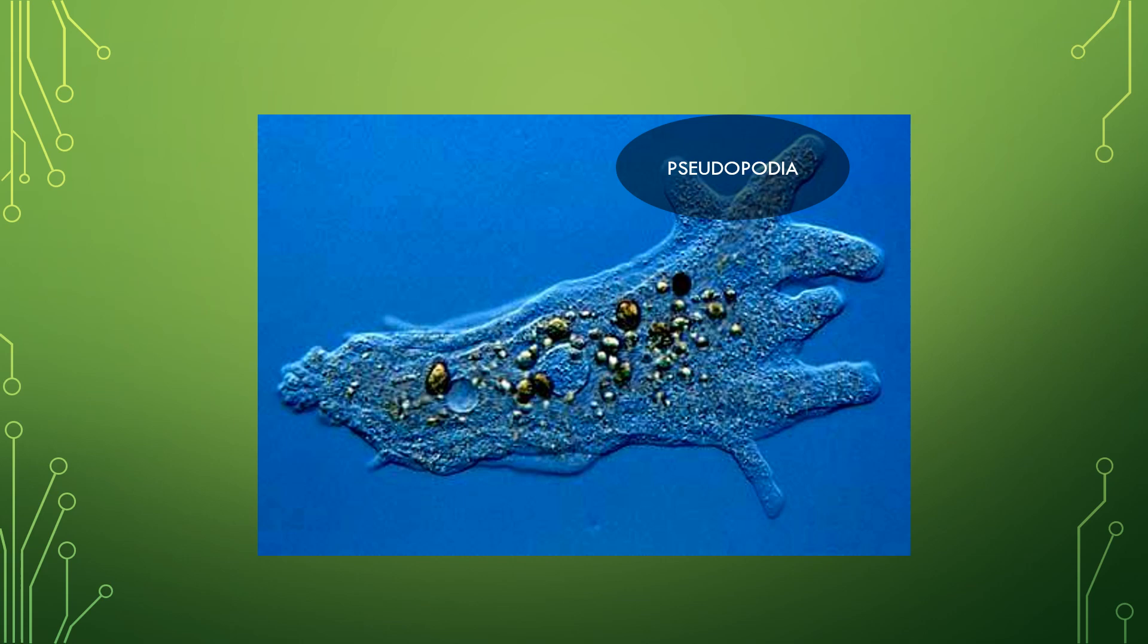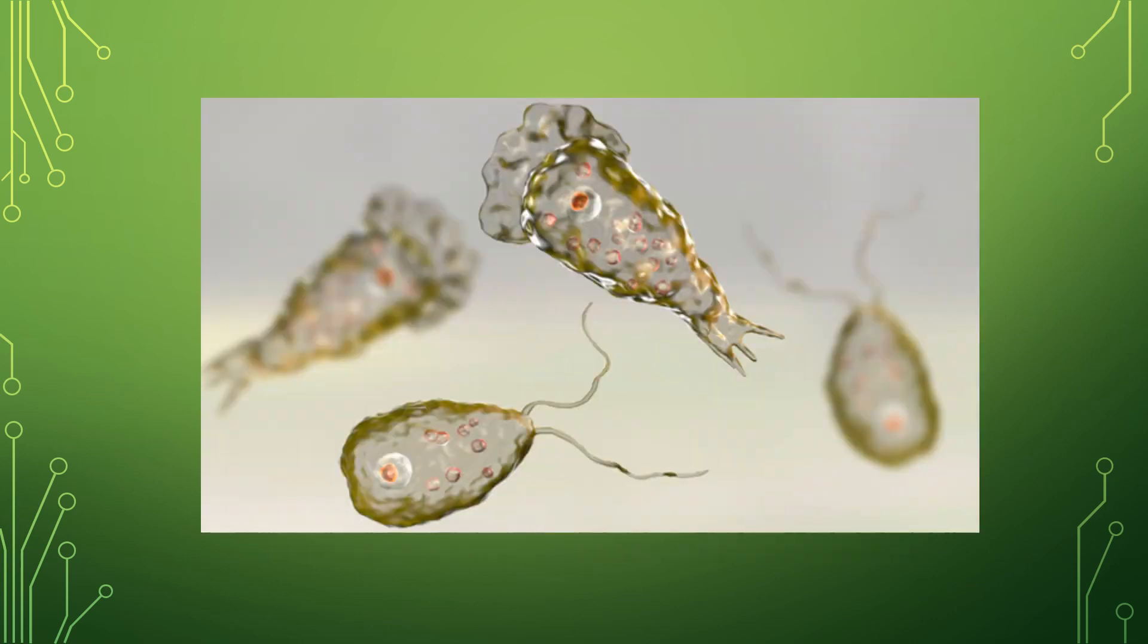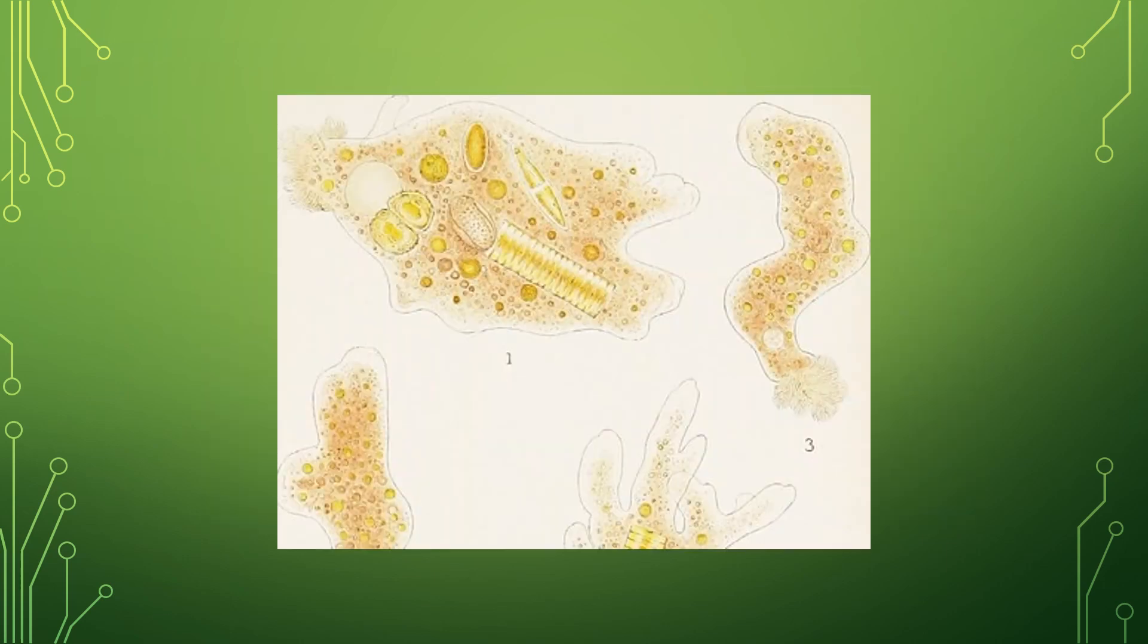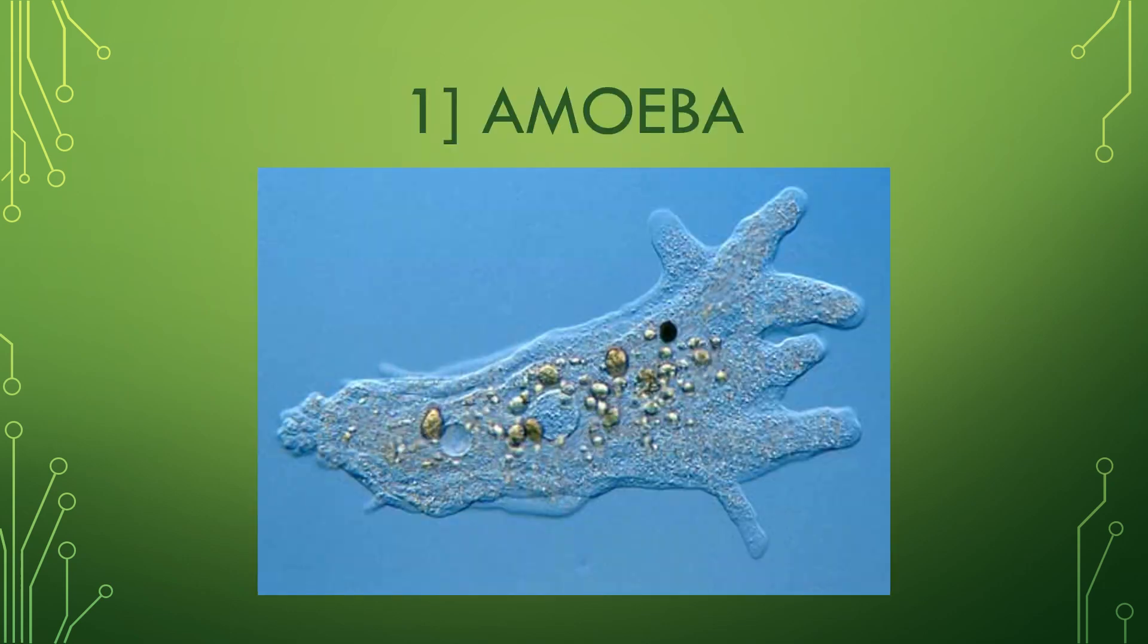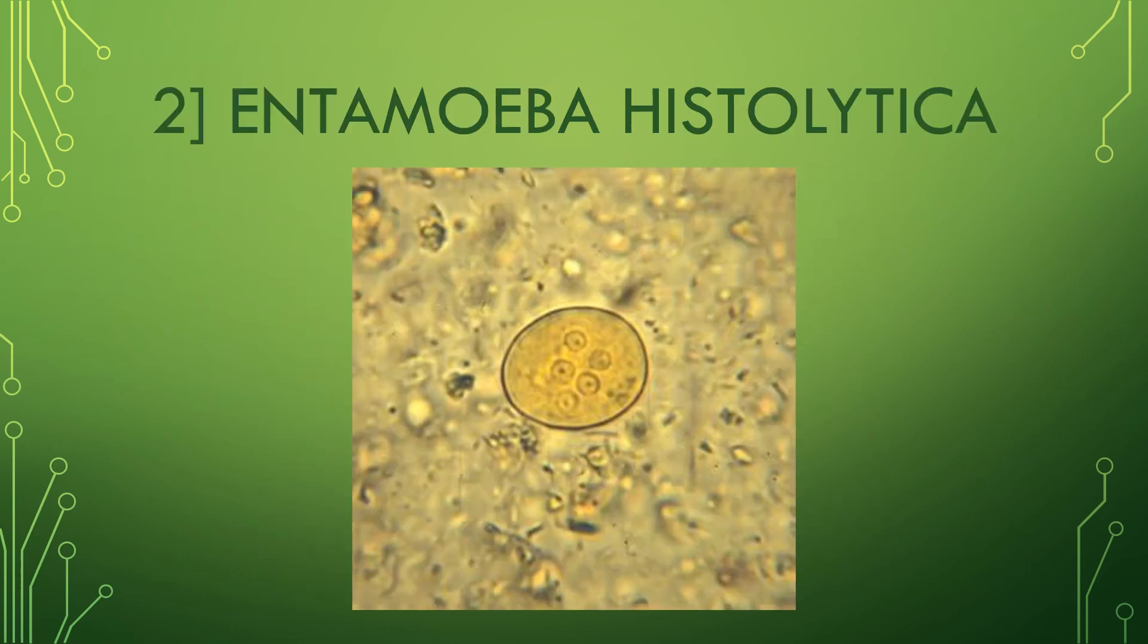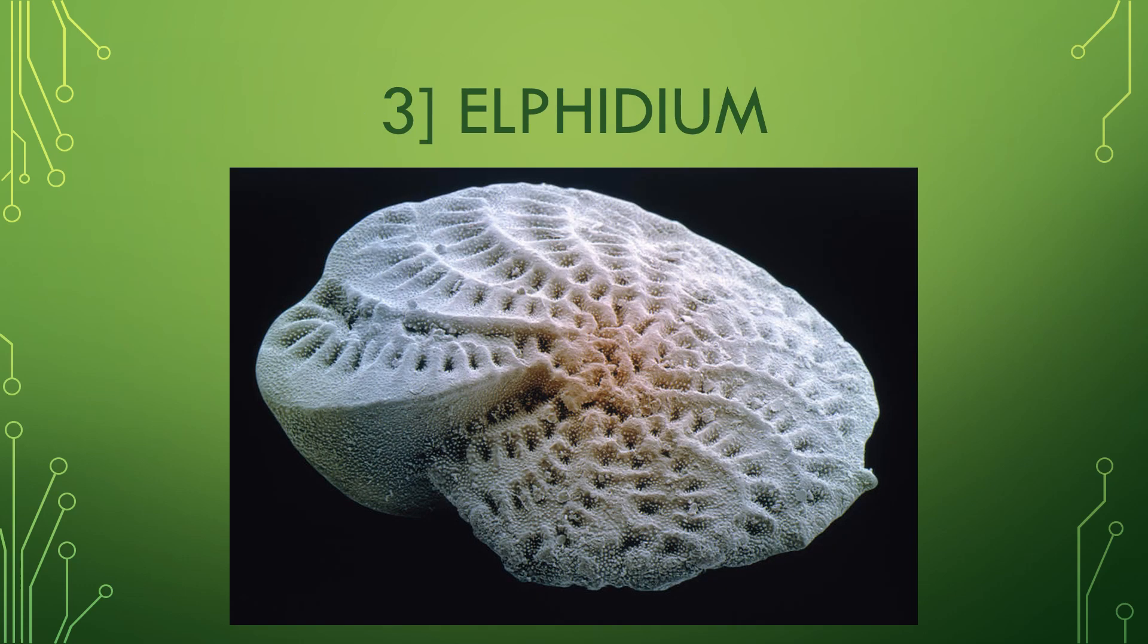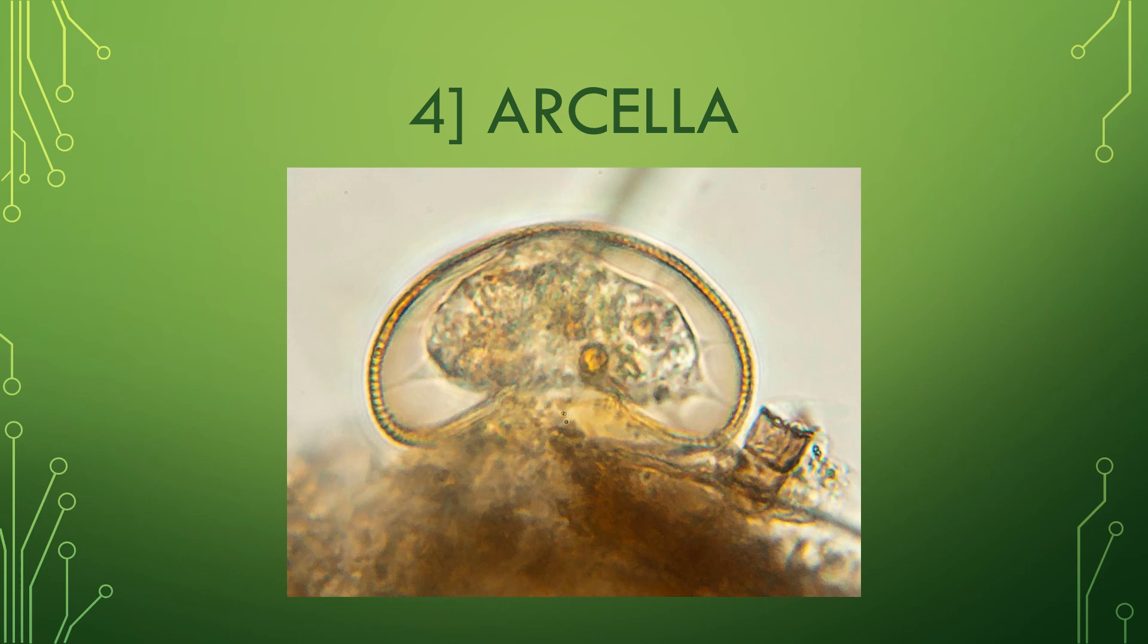Pseudopodia are the locomotory organs and also help to capture the food. It is a unique character, i.e., body shape is changeable due to the presence of pseudopodia which brought about temporary outpushings of the cytoplasm. The mode of nutrition is holozoic. Reproduction takes place by both sexual and asexual methods. Examples include amoeba, Entamoeba histolytica, Elphidium, and Arcella.